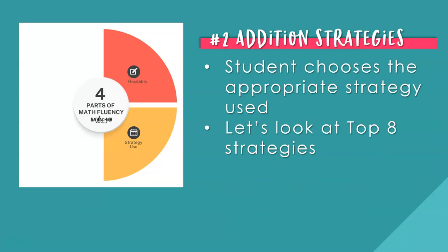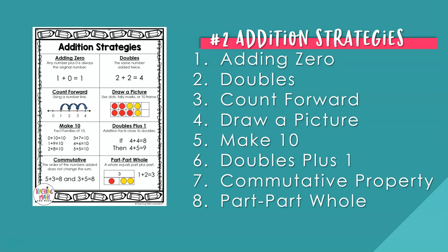Part two of addition fluency is addition strategies. This is where students choose the addition strategy to use — it must be an appropriate strategy for addition fluency. Let's look at the top eight addition strategies. Strategy one: adding zero — any number plus zero is always the original number. For example, one plus zero equals one. Adding zero does not change the original number; it stays the same. Strategy two: doubles — the same number added twice, so two numbers added together equal a sum that is double the original number. For example, two plus two equals four.